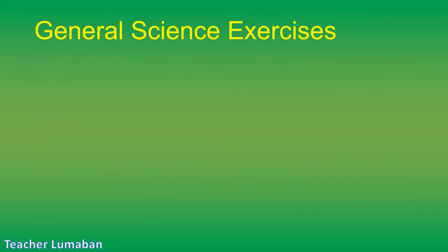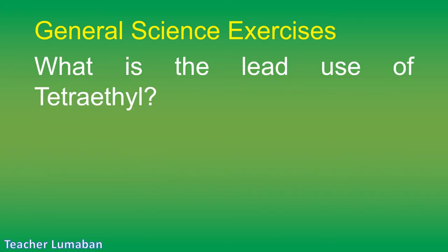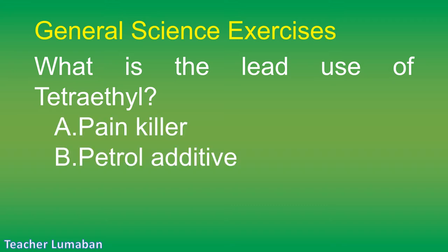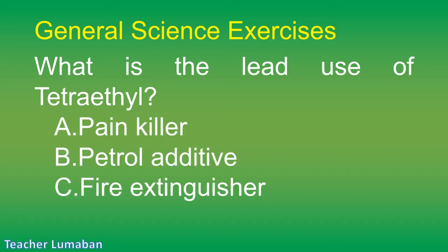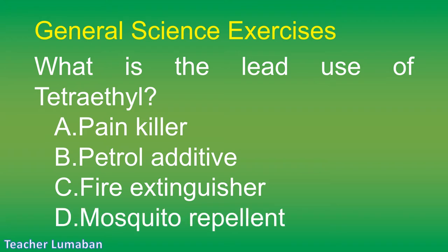What is the lead use of tetraethyl? Letter A: painkiller. Letter B: petrol additive. Letter C: fire extinguisher. Letter D: mosquito repellent.